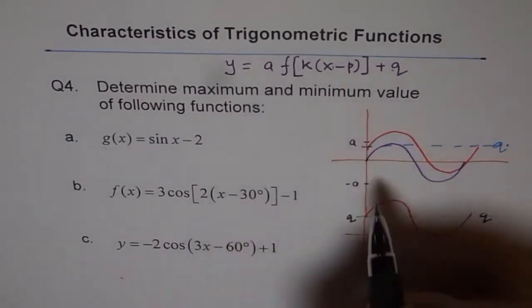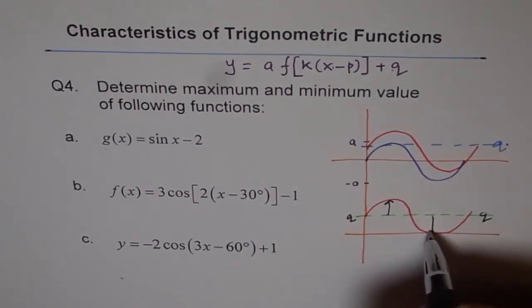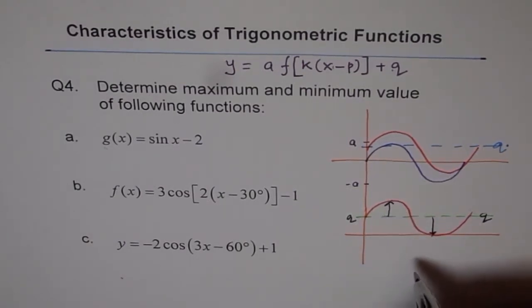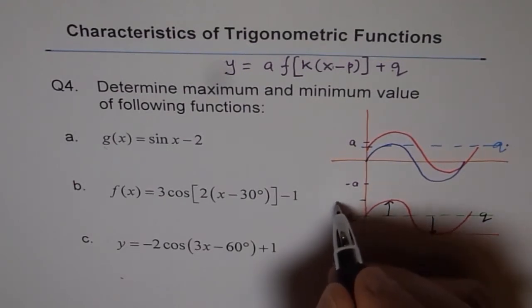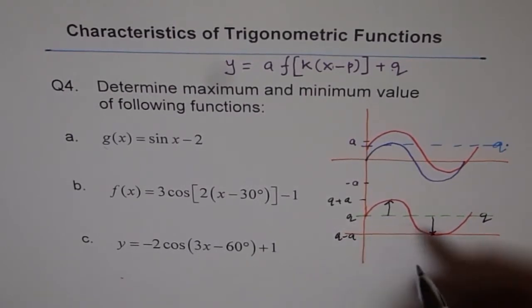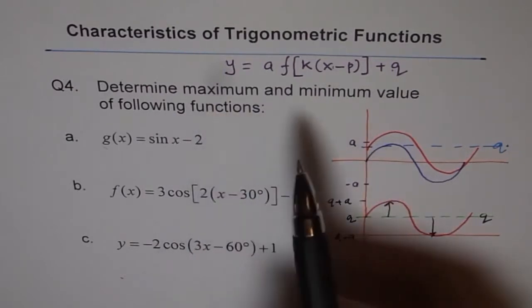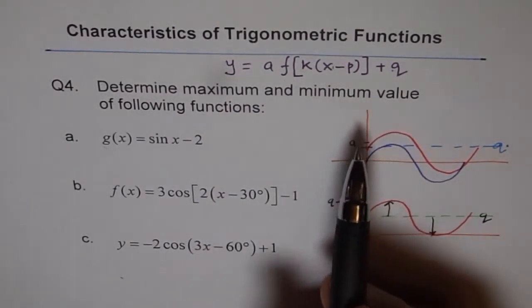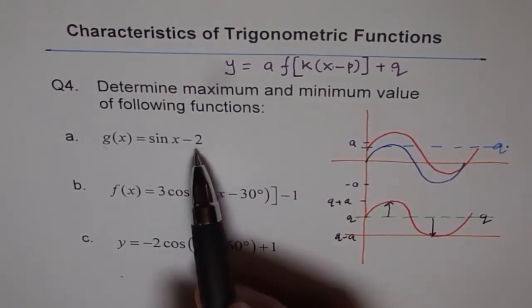And a is how far away you go from q in the positive side and negative side. Since this is axis of symmetry, both these distances are same. So this point will be q plus a, and this point will be q minus a. You see that? So that is how you get your maximum and minimum. In finding maximum and minimum, you have to figure out what is the vertical translation and what is the vertical stretch to get your answer.